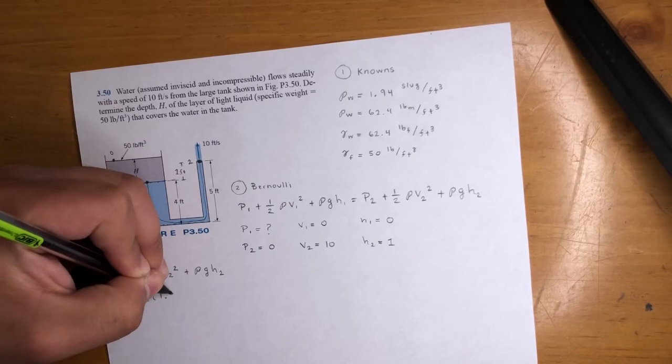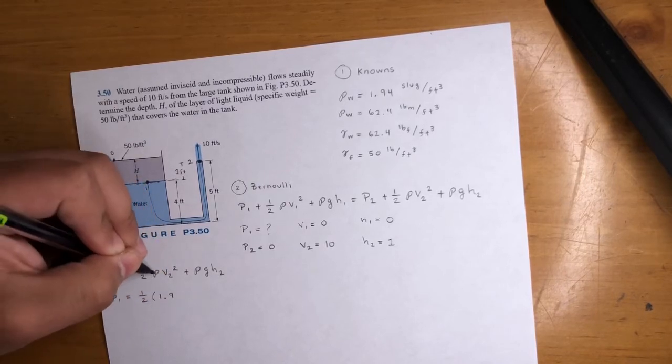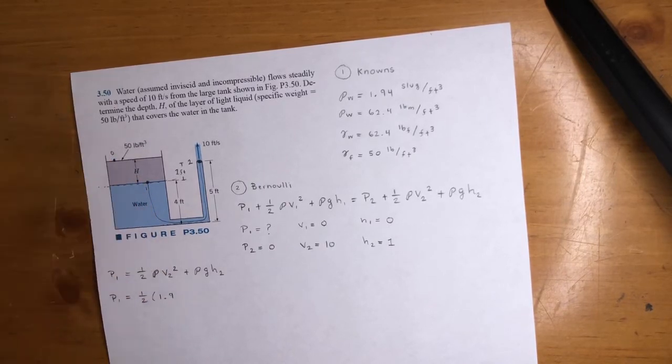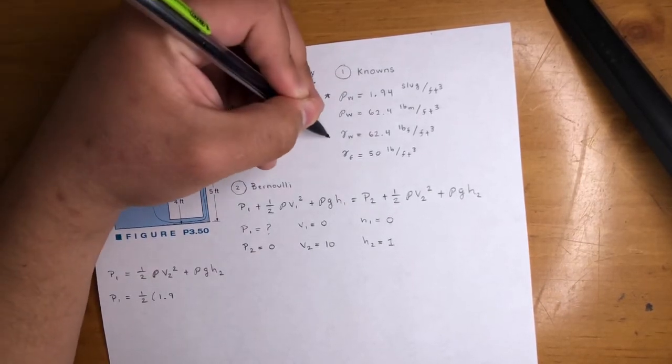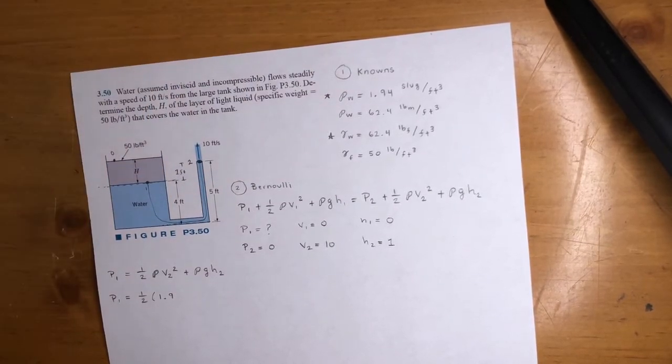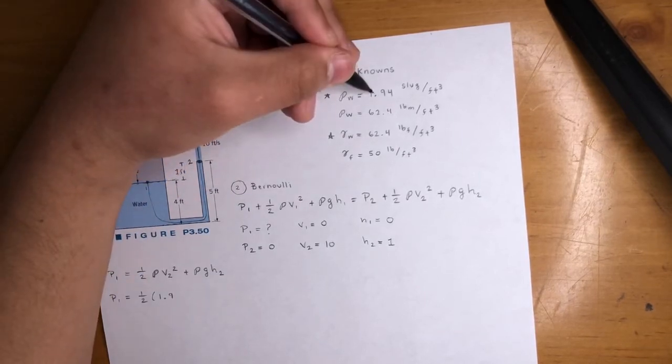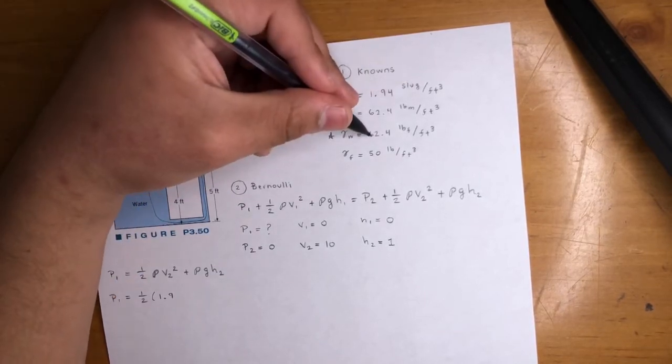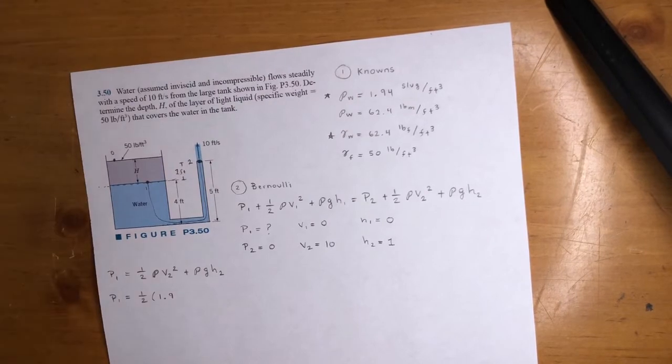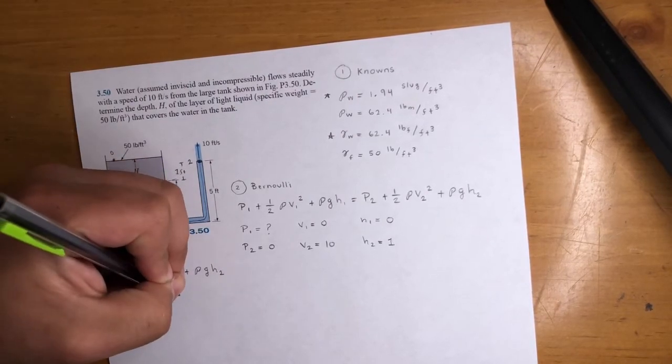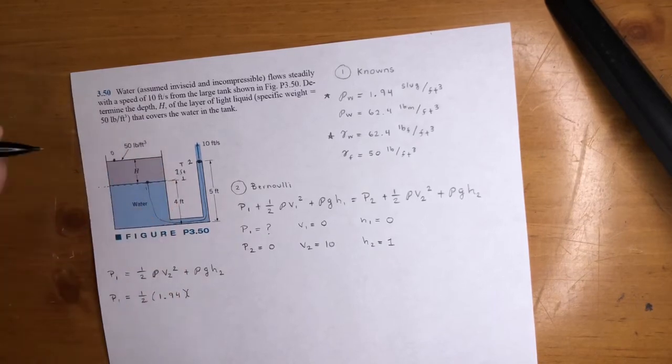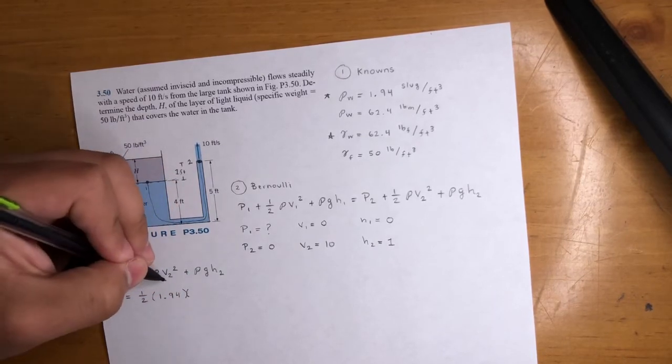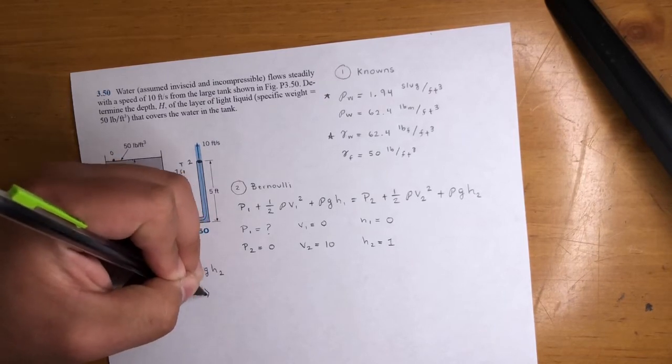In this case, you cannot use 62.4 because we just want density alone. If it makes it any easier, this is the number you have to remember, and this is the number you have to remember. And this number times gravity will give you this number, if that makes it easier. I'm not sure how you want to remember, but just be careful. And I'll show you right now. It should make sense at the very end, but you'll see.